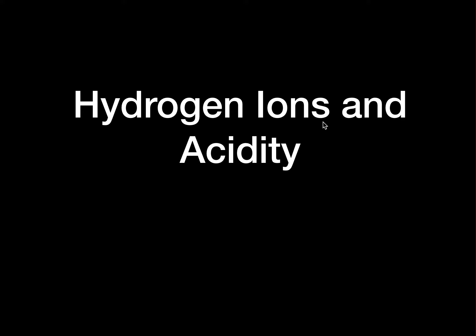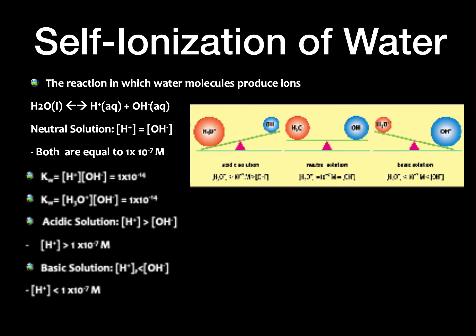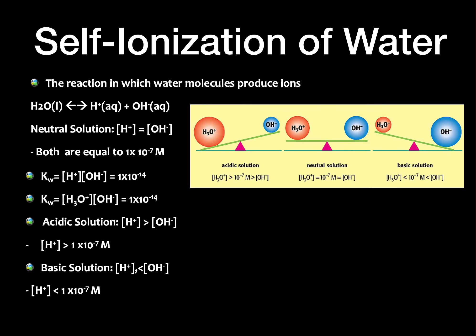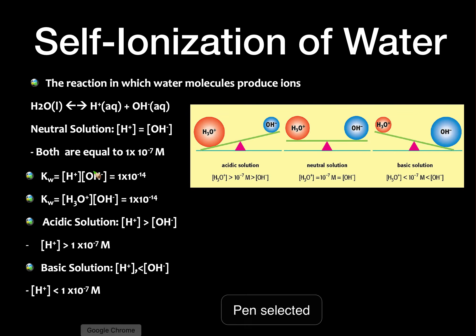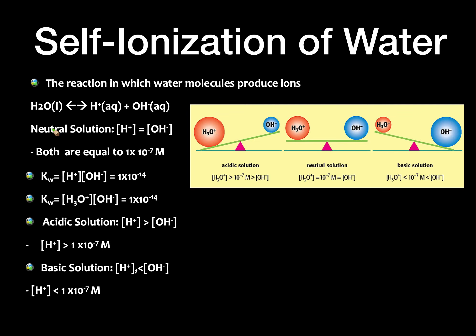Hydrogen ions and acidity. The self-ionization of water is the reaction in which water molecules produce ions. We have H₂O, which is a liquid, and it breaks down into H⁺ and OH⁻.